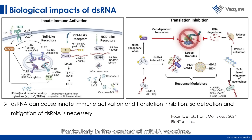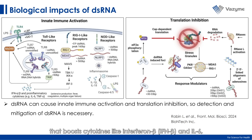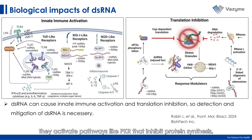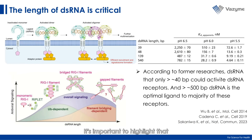Once dsRNA is introduced into cells, particularly in the context of mRNA vaccines, it is recognized by sensors in the innate immune system, such as Toll-like receptors and RIG-I-like receptors. This recognition activates signaling cascades that boost cytokines like interferon-beta and IL-6, which can trigger unwanted inflammation, often called immunogenicity. Additionally, when these immune sensors detect dsRNA, they activate pathways like PKR that inhibit protein synthesis, potentially reducing the production of target antigens and leading to poor mRNA vaccine performance.